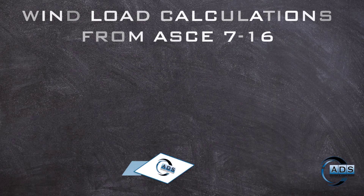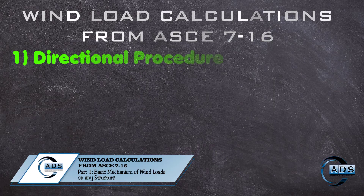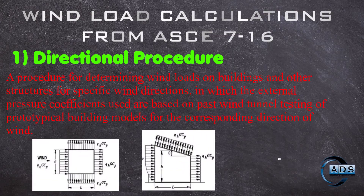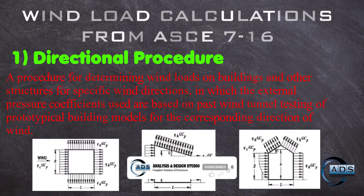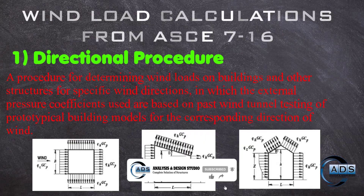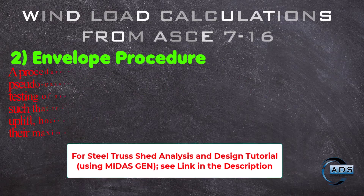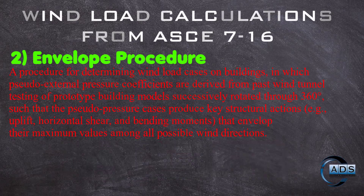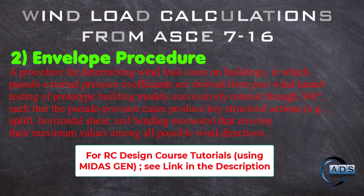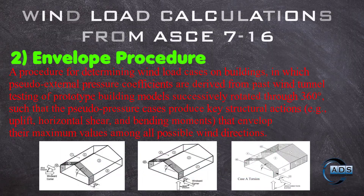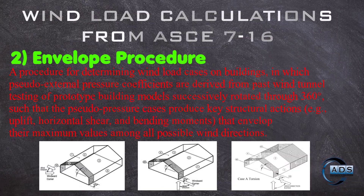Let me briefly explain the above procedures. The first is the directional procedure — a procedure for determining wind loads on buildings and other structures for a specific wind direction, in which external pressure coefficients are based on past wind tunnel testing of prototype building models for the corresponding direction of wind. The second is the envelope procedure — a procedure for determining wind load cases on buildings in which pseudo external pressure coefficients are derived from past wind tunnel tests of prototype building models successively rotated through 360 degrees, such that the pseudo pressure cases produce structural actions — for example, uplift, horizontal shear, and bending moments — that envelope their maximum values among all possible wind directions.